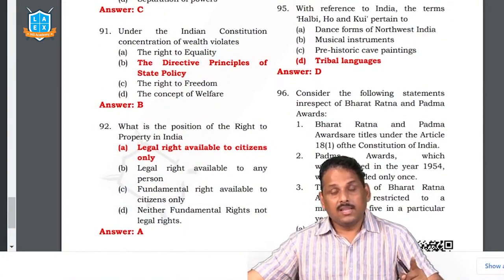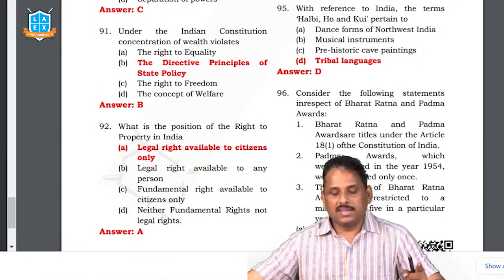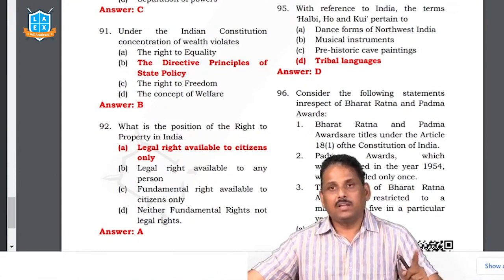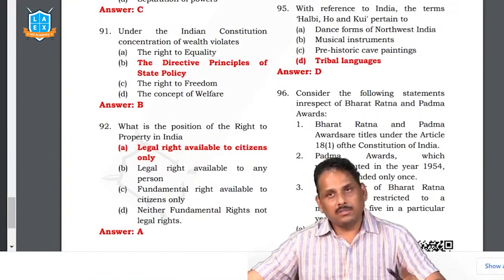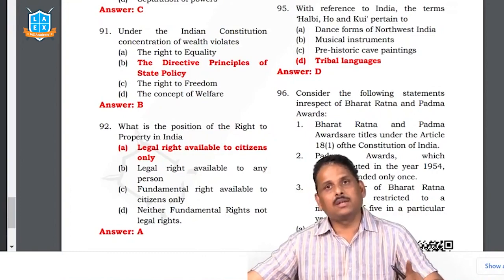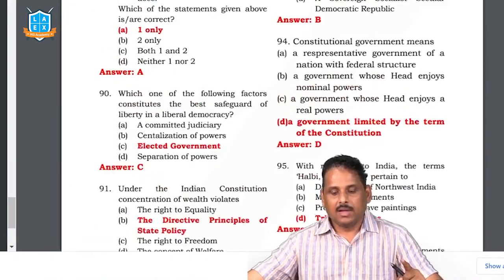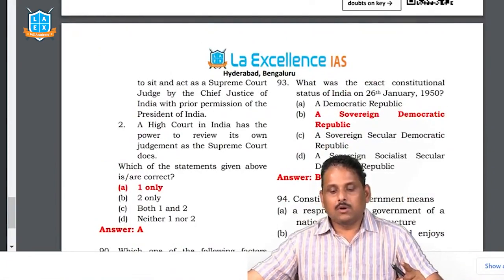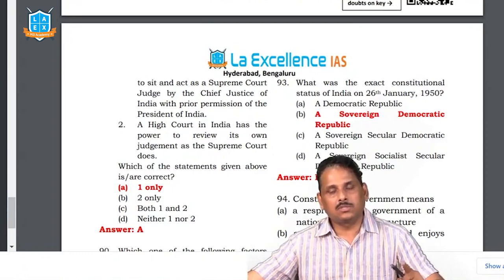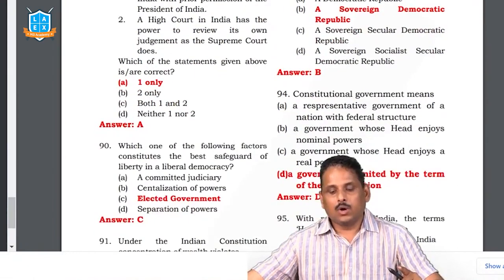The right to property is in Article 300A — the 44th Constitutional Amendment Act removed it from fundamental rights and placed it under Article 300A. It is available to citizens only and is a legal right, not a fundamental right. Foreigners and foreign citizens cannot buy agricultural land or transact on it. Question 93: in the original Constitution on 26th January 1950, the words 'socialist' and 'secular' were not there — they were added through the 42nd Amendment Act. A constitutional government is a limited government — the powers of the government must be limited by the Constitution.